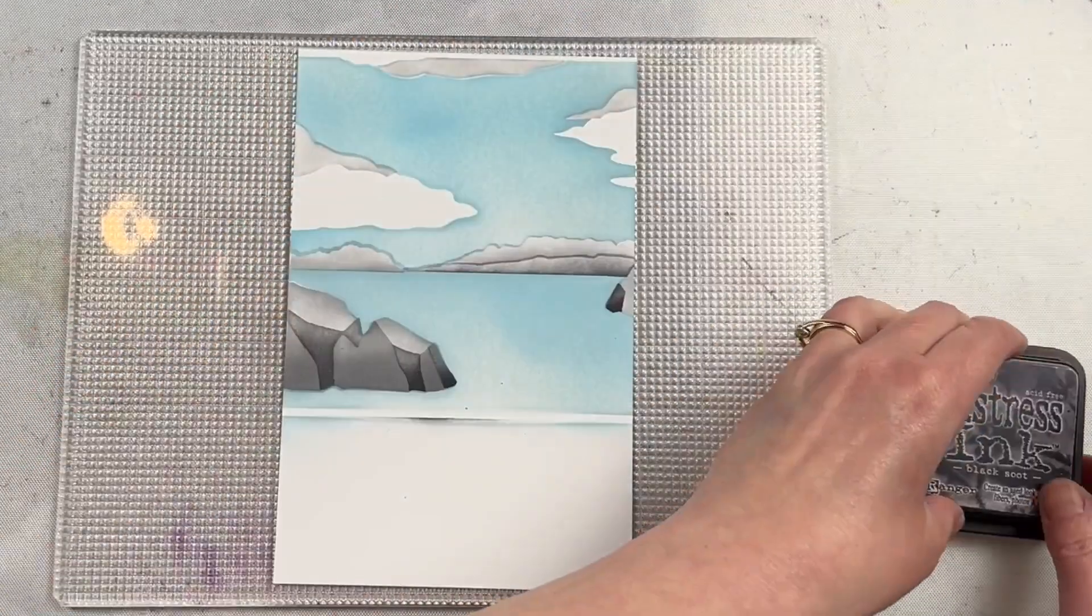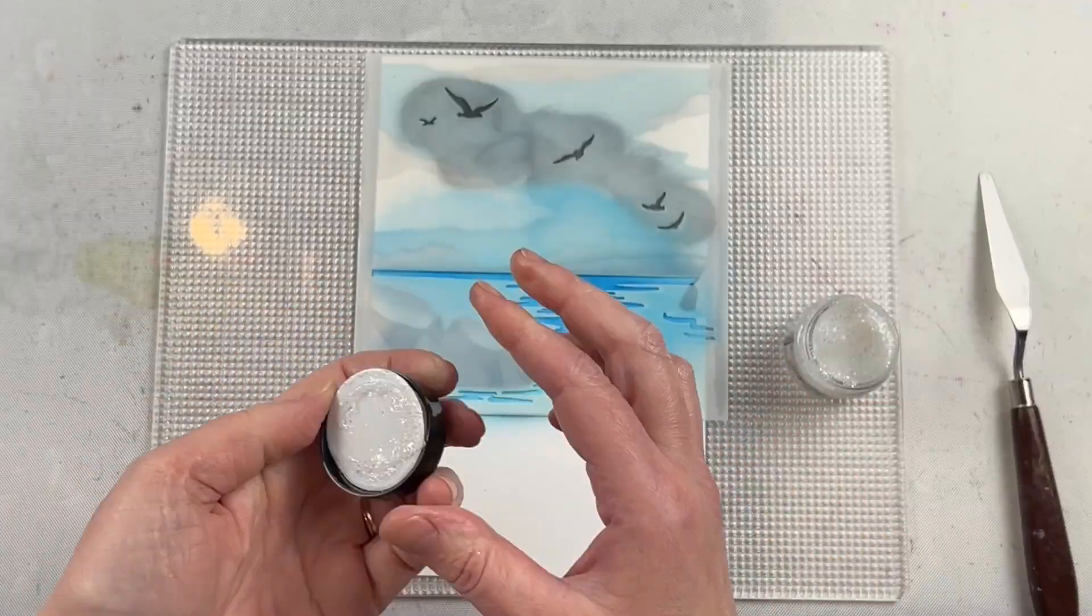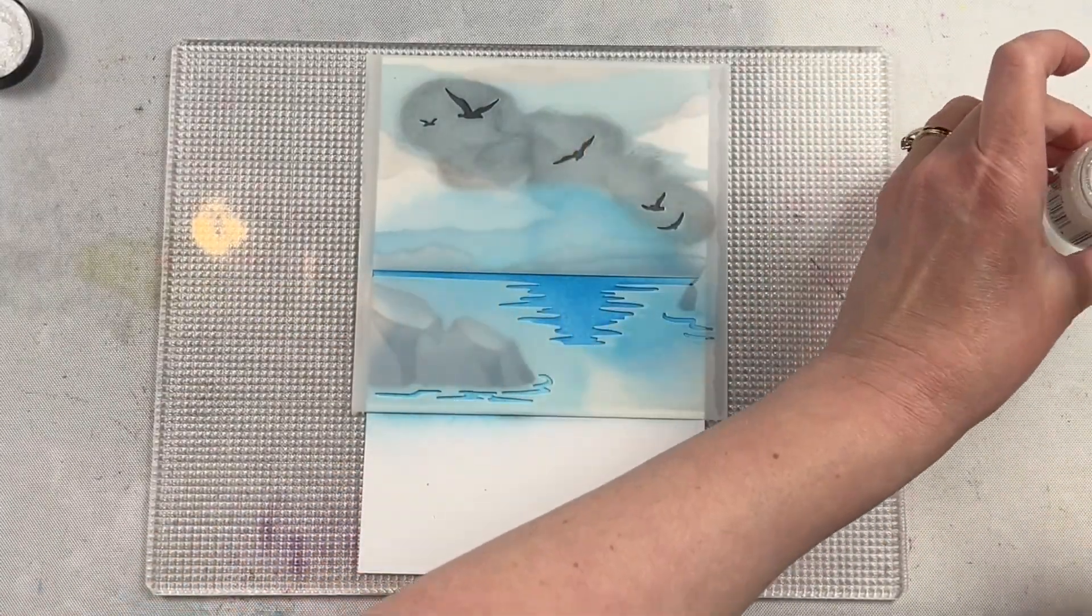I've kept my palette very neutral with this, only using blues and grays, but you can also change up your colors and create a sunset, and I do that in my last card.